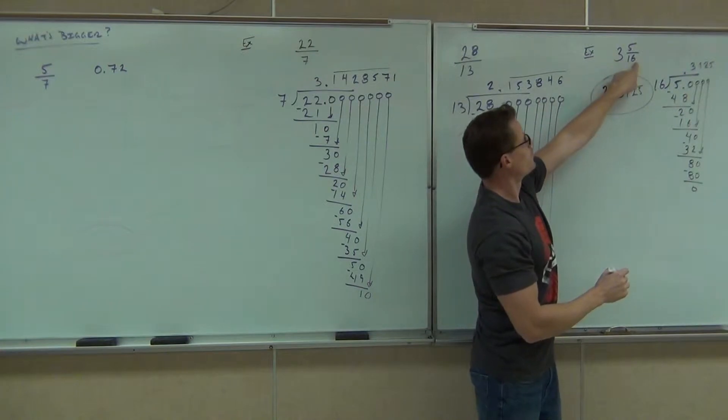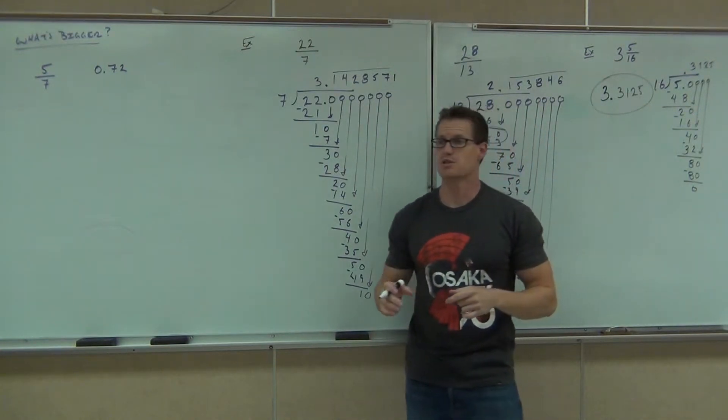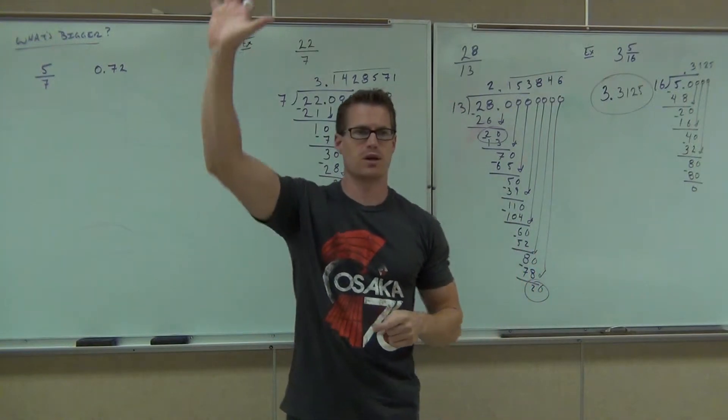3, 0.3125. That's the way your mixed numbers can be changed into a decimal. How many of you feel okay about that?